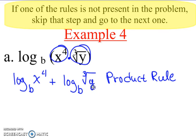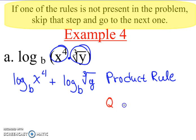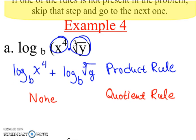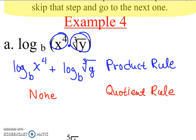Then we go to our quotient rule and check: is there any division going on here? Looking at the original problem, there is no division happening at all, so there is no quotient rule to apply — we skip it entirely.